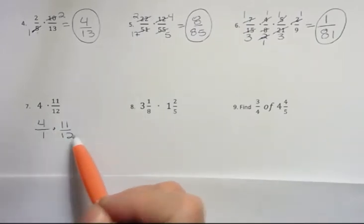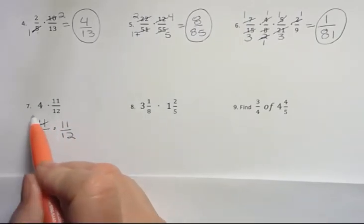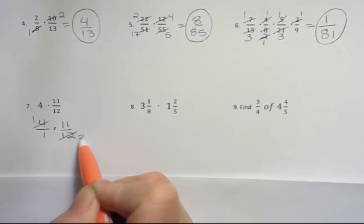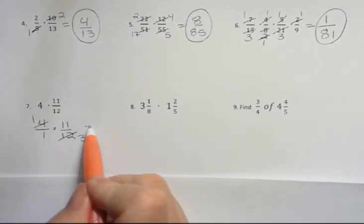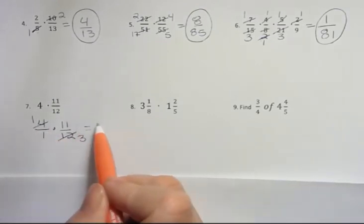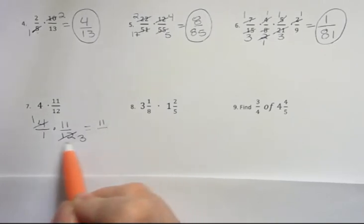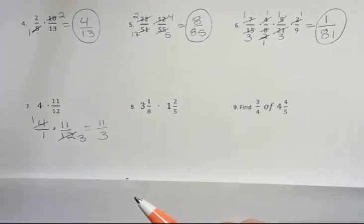So we're just going to put a 1 under our 4 here and then multiply. I can cross cancel. I have 4 and 12 that can be canceled. 4 goes into itself once and it goes into 12 three times. If I multiply straight across, I get 11 over 3.